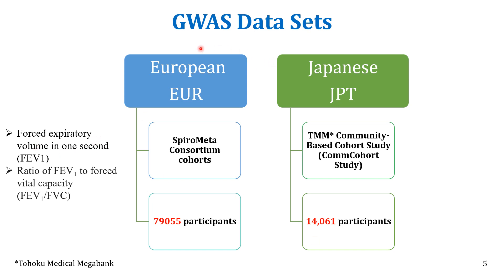The GWAS data used in this study was for forced expiratory volume in one second (FEV1). The lung function GWAS data were taken from the European population and the Japanese population. The European dataset was taken from the Spiromics Consortium cohort, and the Tohoku University Megabank community-based cohort was used for the Japanese population. There were 14,000 participants in the Japanese cohort and 79,055 participants in the European cohort.